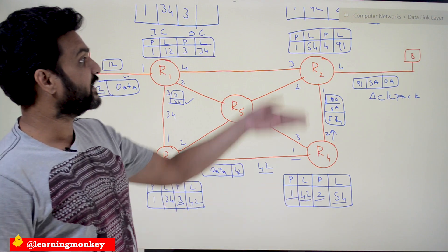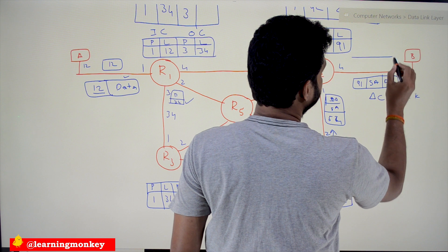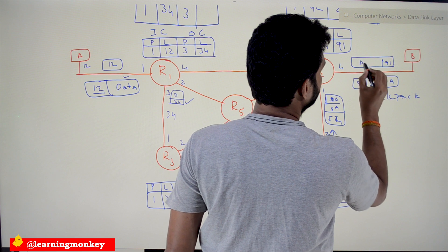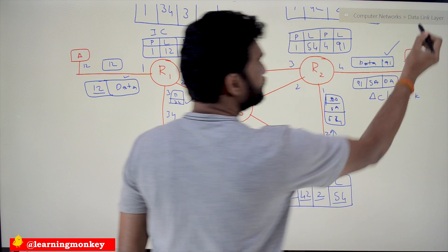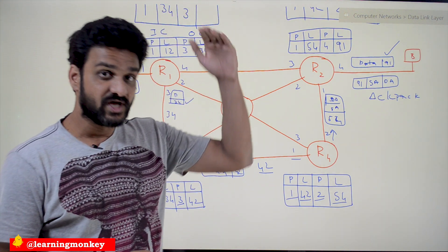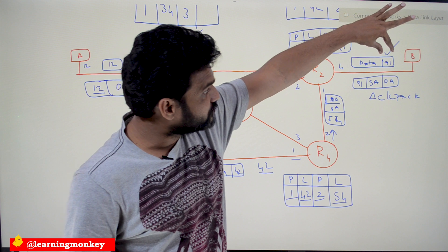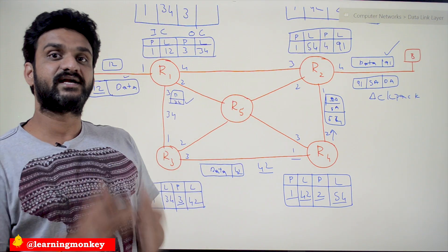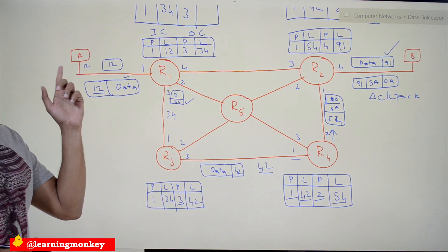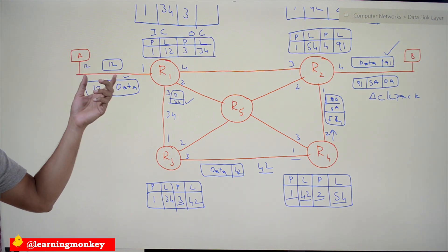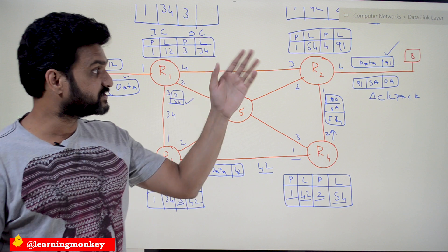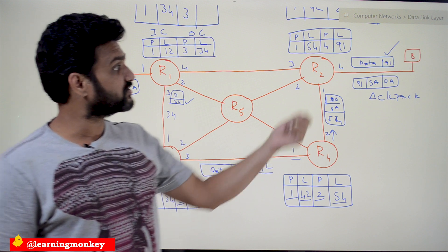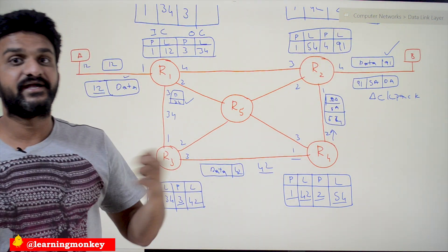After receiving with interface 1 and label 42, the data is transmitted through port 2 with label 54. Receiving at the next router, it transmits the data with label 91. The destination sees label 91, checks its table, and understands the data has been received from system A. Since the connection is already established, it accepts that data. This is how the data transfer phase works.